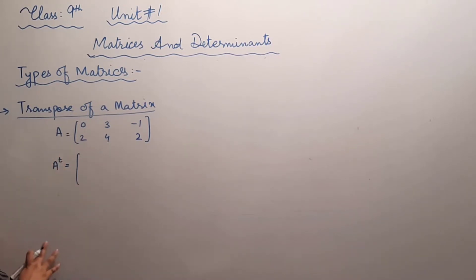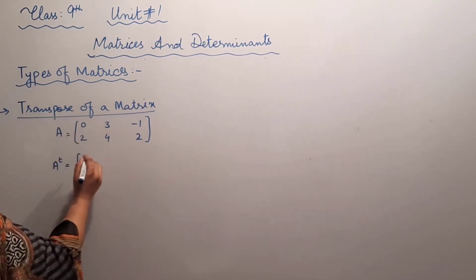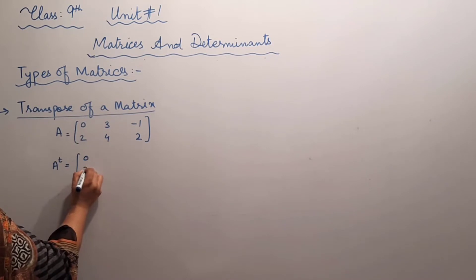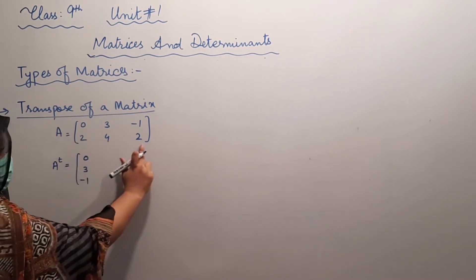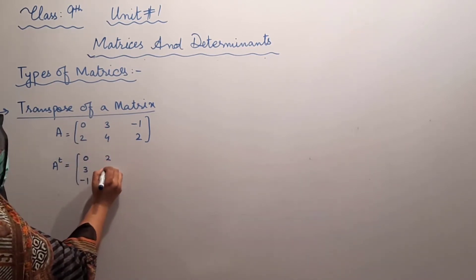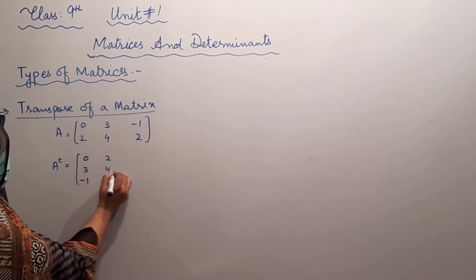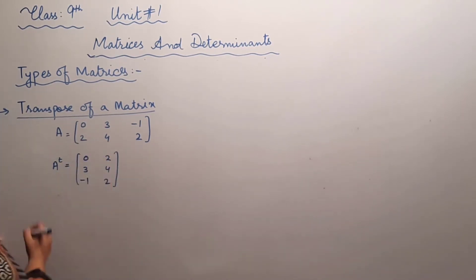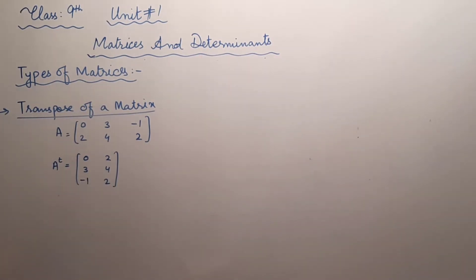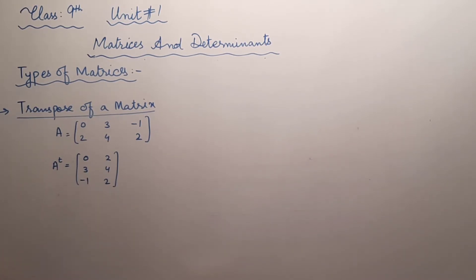You write it as a small t in the power. The first row you write into the first column, and the second row you write into the second column. So this becomes A transpose. Changing rows into columns or columns into rows is known as transpose of the matrix.